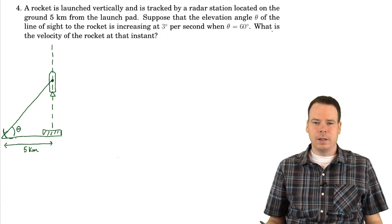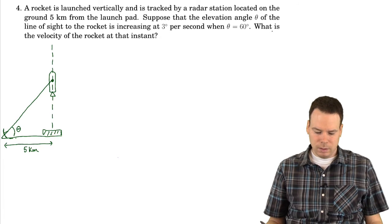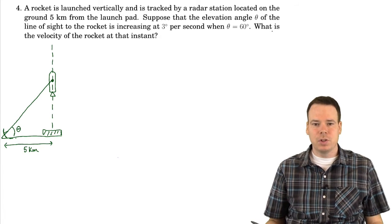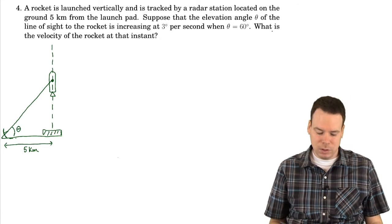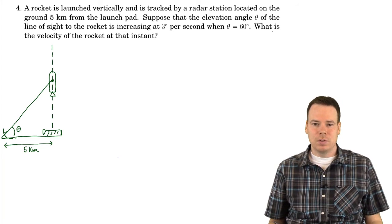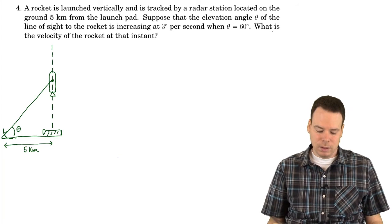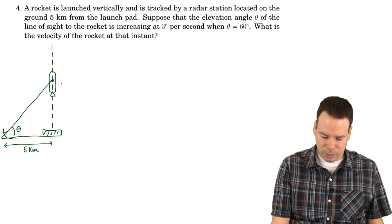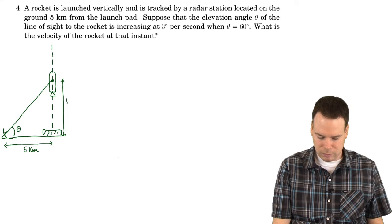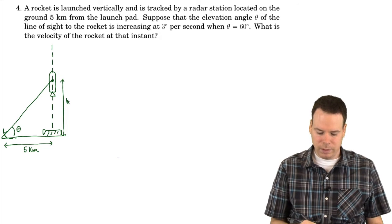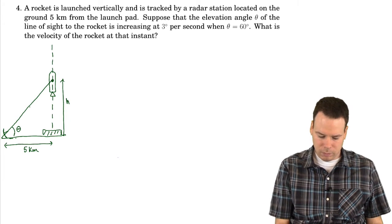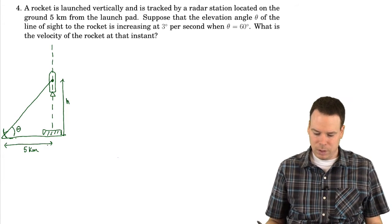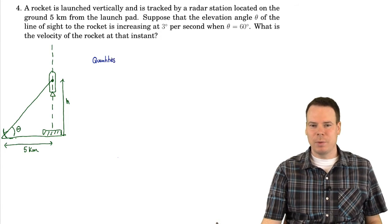What is the velocity of the rocket at that instant? Well, if we're going to talk about velocity — that means the rate of change in position — we should indicate a variable which represents the position of the rocket. We should measure its position from a fixed frame of reference, probably the launch pad. It's being launched vertically upwards, so we'll measure its height from the launch pad and call that H.